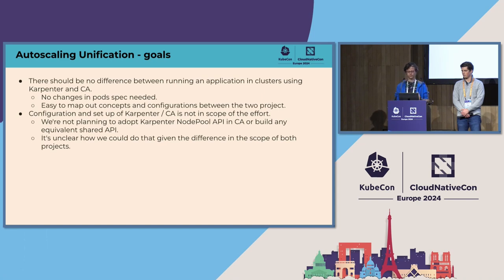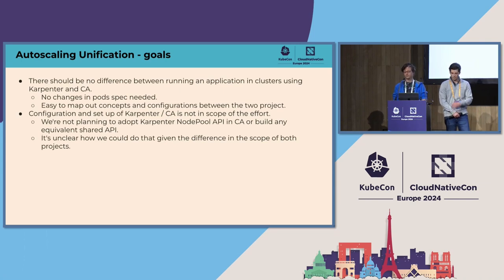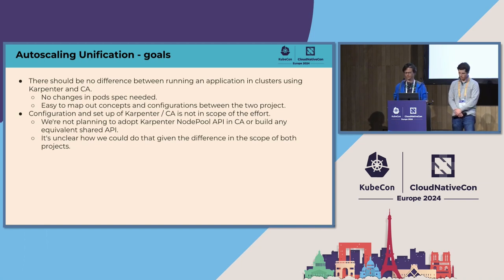The more significant differences show up on the configuration side — how you set up your cluster is quite different between Cluster Autoscaler and Karpenter, and we don't see a way to address that. We started a unification effort focused on pod-level and workload-level portability. We're not trying to unify how autoscalers are set up or configured, and we don't plan to adopt Karpenter's NodePool API in Cluster Autoscaler or build any shared API of that sort.